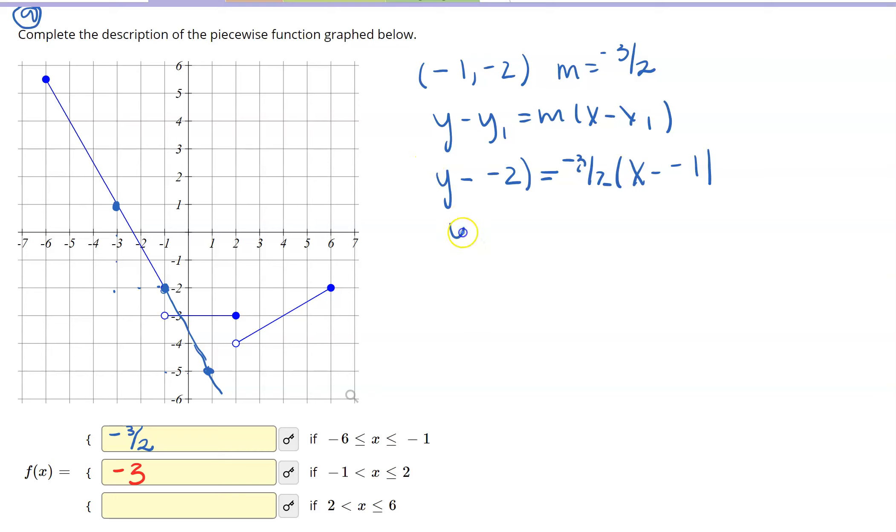Now cleaning this up, this is just y plus 2 equal to negative 3 halves x plus 1. Just cleaning up my negatives. And so then I'm going to distribute that out. So it gives me y plus 2 equal to negative 3 halves x minus 3 halves, and then subtract that 2 over.